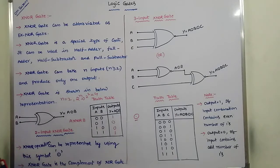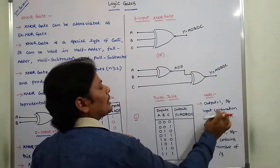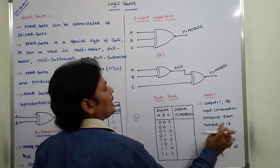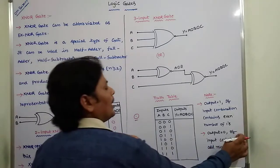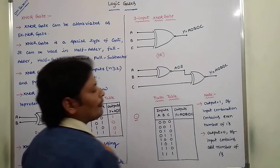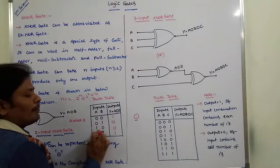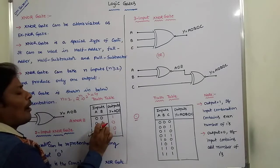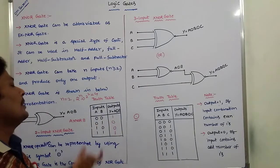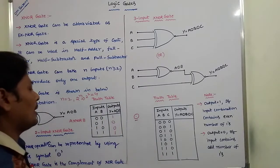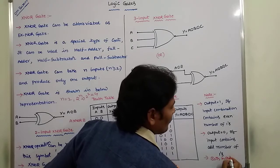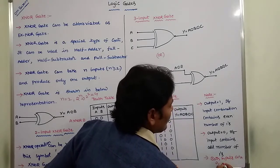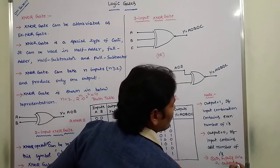So this is the exclusive NOR operation rule: if the input combination contains an even number of 1s, output is equal to 1; if the input combination contains an odd number of 1s, output is equal to 0. When both inputs are 0, the output is equal to 1.